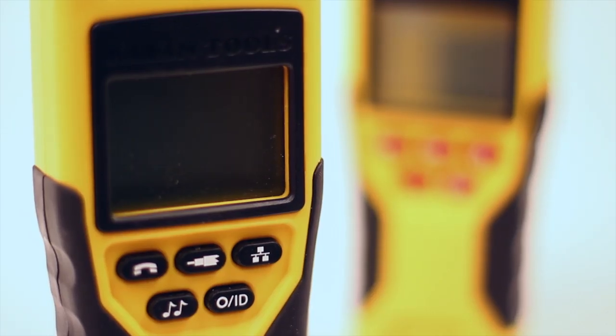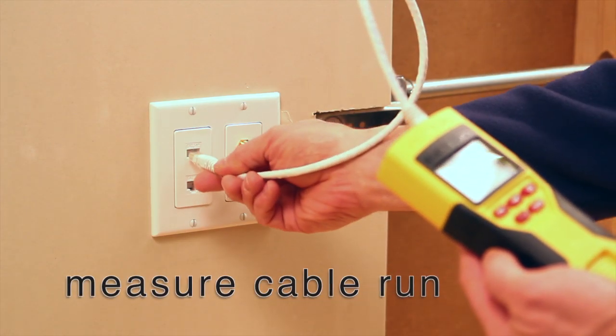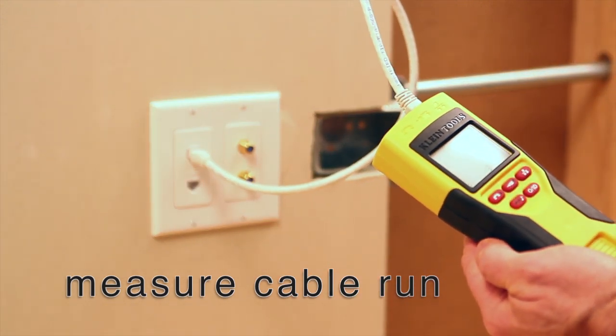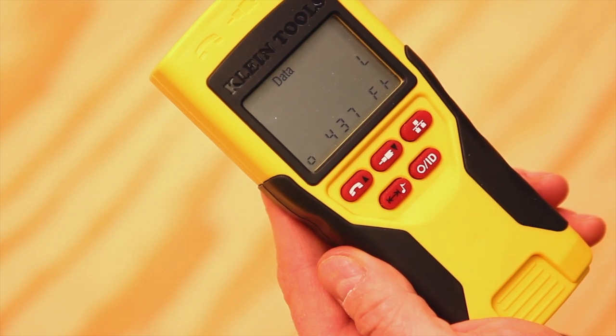The VDV Scout Pro LT builds on the features included on the VDV Scout Pro. It adds the ability to measure cable length. You can determine the length of a cable run, the distance to an open, or the remaining wire on a reel quickly and easily.